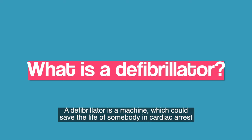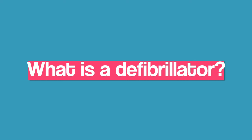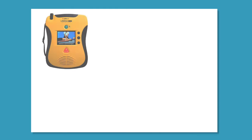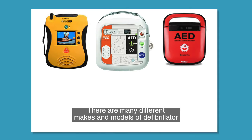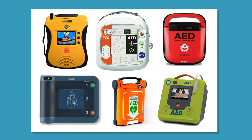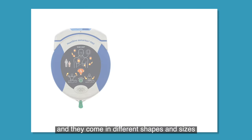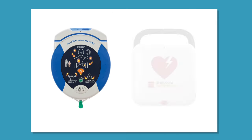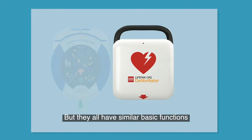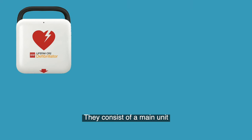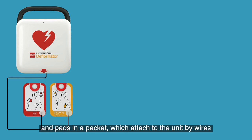A defibrillator is a machine which could save the life of somebody in cardiac arrest. There are many different makes and models of defibrillator and they come in different shapes and sizes, but they all have similar basic functions. They consist of a main unit and pads in a packet which attach to the unit by wires.